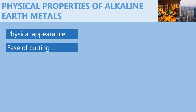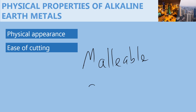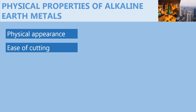Magnesium is hard to cut with a knife. Nonetheless, it is malleable and ductile, meaning it can be made into a wire. Calcium, on the other hand, is brittle and cannot be cut with a knife.